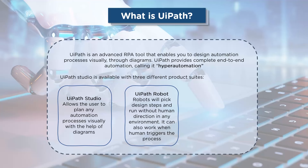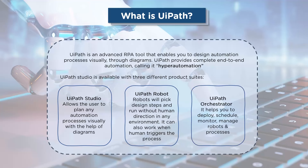UiPath Robots run automation bots created using UiPath Studio. There are different types of robots. First, we have attended robots — these work with you to speed up the service desk and help desk, and are used in activities where human involvement is key. Next, we have unattended robots — they operate without human touch, maximizing cost and performance benefits for back-office tasks.